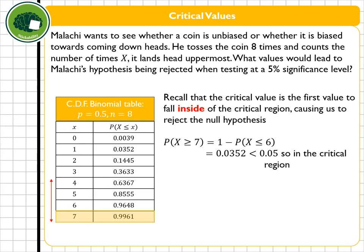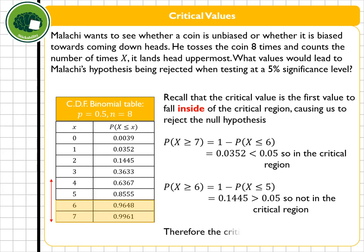I'm then going to do the same for the probability that x is greater than or equal to six, which is one minus the probability x is less than or equal to five, which gives me a value of 0.1445. This time that's bigger than 0.05 so not in the critical region. So if Malachi got six heads that's not significant, but if he got seven it is. So seven is our critical value.